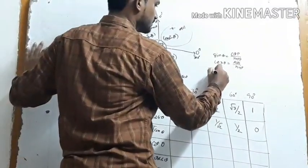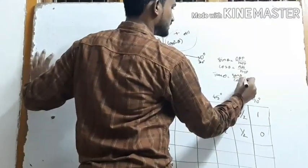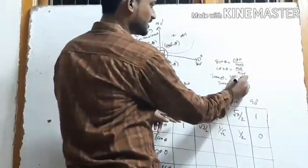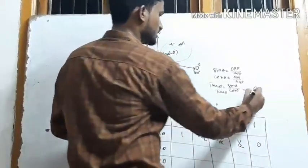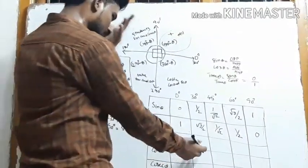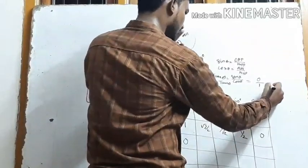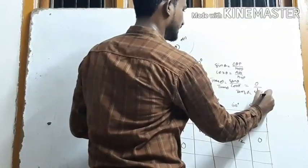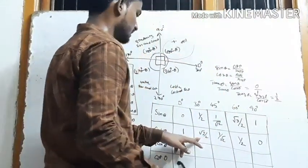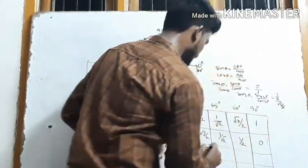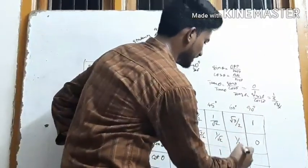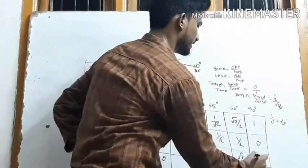For tan, we know tan θ = sin θ by cos θ. Tan 0° = sin 0° / cos 0° = 0/1 = 0. Tan 30° = sin 30° / cos 30° = (1/2) / (√3/2) = 1/√3. Tan 45° = 1. Tan 60° = √3. Tan 90° = 1/0 = infinity.